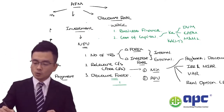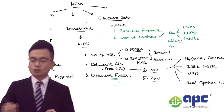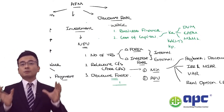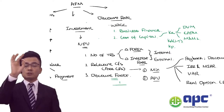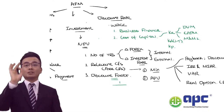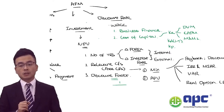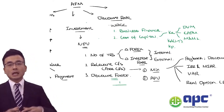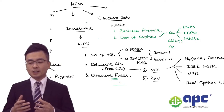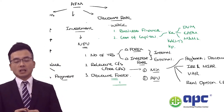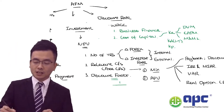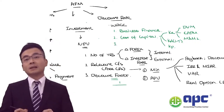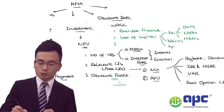We also need to calculate the cost of preference shares by using the dividend from the preference share as the numerator and dividing by the preference share price. Mixing them all together gives us the weighted average cost of capital. We may also need to consider the capital structure.